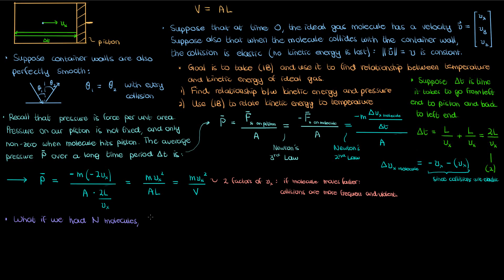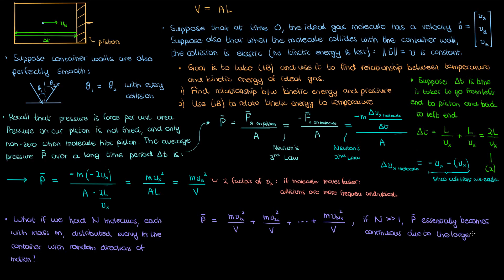So we found the pressure for a single molecule and its relationship with kinetic energy, but what if we had capital N molecules, each with mass small m and with all distributed evenly in the cylinder with random directions of motion? Well, then the average pressure being exerted on the piston becomes the sum of the individual pressures being exerted on the piston by each of these molecules, so you sum all these individual terms together with the individual x velocities of each of these molecules. If we suppose that the number of molecules is very large, then instead of pressure constantly fluctuating instant to instant, it becomes a more continuous quantity because at any given time there's always collisions going on with the piston and our ideal gas molecules.